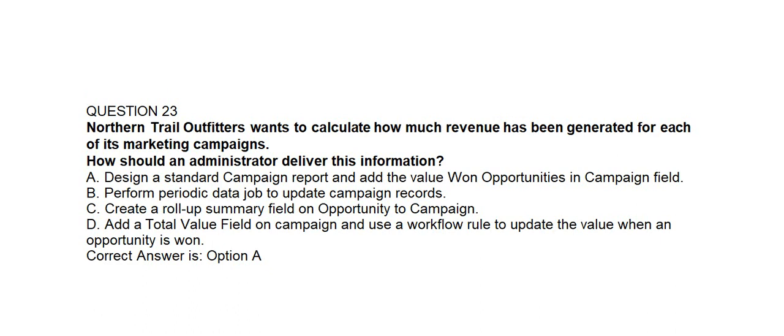Option A: design a standard campaign report and add the value-owned opportunities in campaign field. Option B: perform a periodic data job to update campaign records. Option C: create a roll-up summary field on opportunity to campaign. Option D: add a total value field on campaign and use a workflow rule to update the value when an opportunity is won.